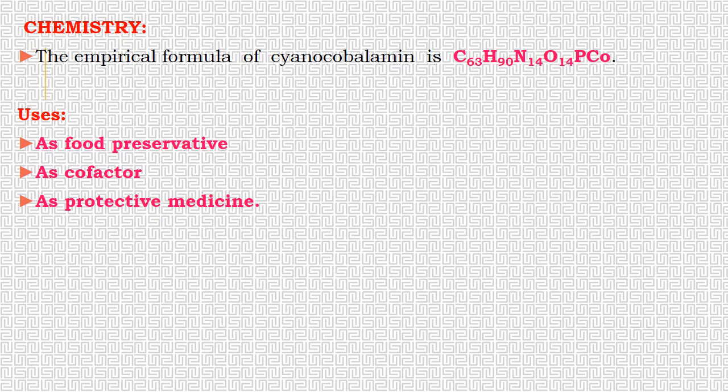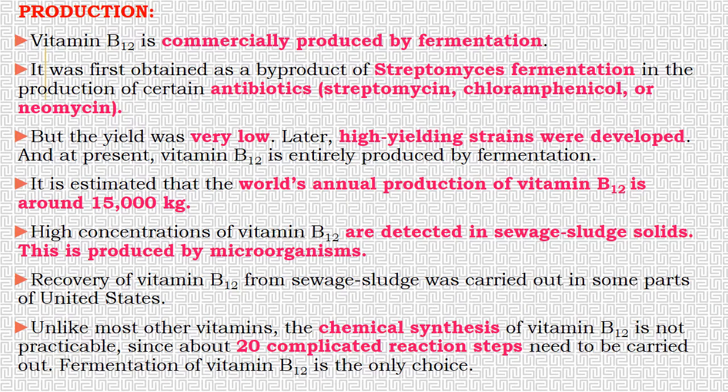The molecular structure of cyanocobalamin contains 63 carbon atoms, 90 hydrogen atoms, 14 nitrogen atoms, and 14 oxygen atoms, along with a phosphate molecule and cobalt. This is the exact molecular formula of cobalamin. It has specific uses as a food preservative, a cofactor, and a protective medicine. That is why we go for the commercialization of Vitamin B12.